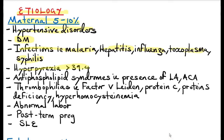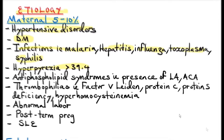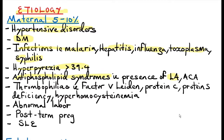Maternal fevers of more than 39.4 degrees Celsius can cause intrauterine fetal death. Antiphospholipid syndromes like the presence of lupus anticoagulant and anti-cardiolipin antibodies — what these antibodies do is cause decidual vasculopathy and fibrinoid necrosis, which results in placental vascular atherosis and intervillous thrombosis, causing placental insufficiency and in turn intrauterine fetal death.